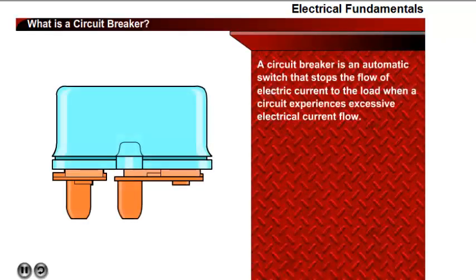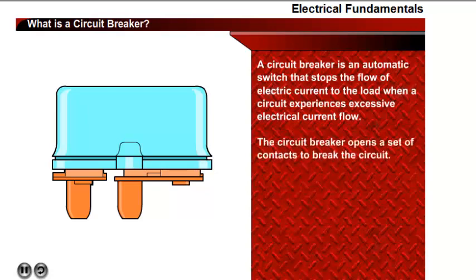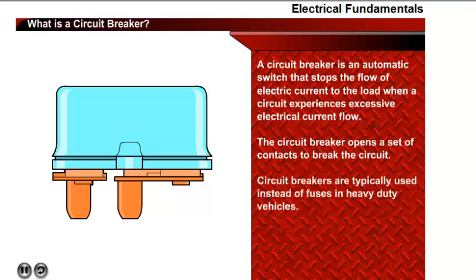A circuit breaker is an automatic switch that stops the flow of electric current to the load when a circuit experiences excessive electrical current flow. When this happens, the circuit breaker opens a set of contacts to break the circuit and interrupts the flow of electricity to the load. Circuit breakers are typically used instead of fuses in heavy-duty vehicles.